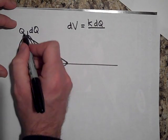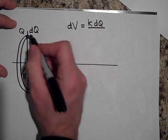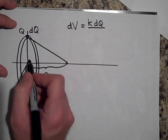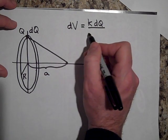That little thing - that Q is for the whole thing. dQ is for that little thing. And then it's going to be over how far that is from that point. So that's going to be R squared plus A squared, square root it.